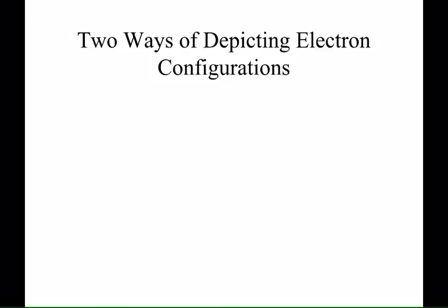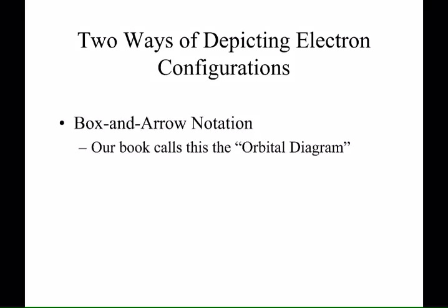There are two main ways of saying how electrons are configured around the nucleus of an atom, and you're going to need to know both of them. I'm going to start with this box-and-arrow notation, but your textbook, Tro, calls it orbital diagrams. So box-and-arrow notation, orbital diagrams, it's the same thing.